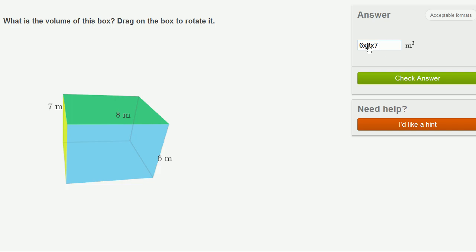6 times 8 is 48. Let me see if I can do this in my head. 48 times 7, that's 40 times 7, which is going to be 280, plus 8 times 7, which is 56. 280 plus 56 is going to be 336.